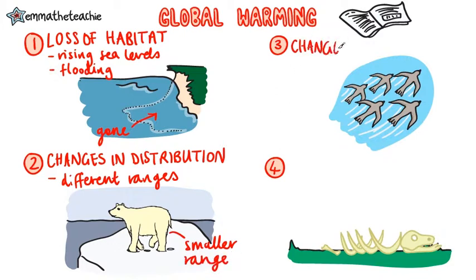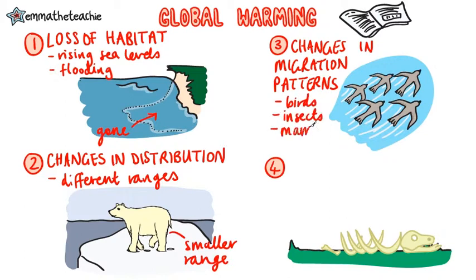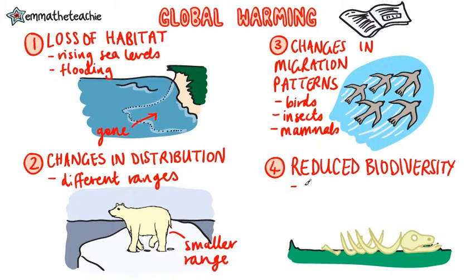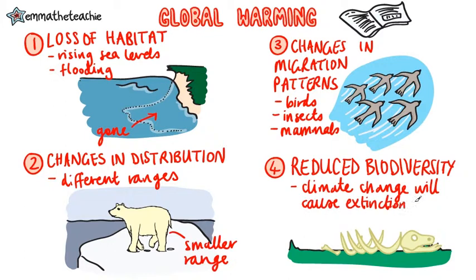Global warming will also cause changes in migration patterns. Many species of birds, insects and some mammals move around the world with the seasons, but this may change as the climate changes. Finally, it will cause reduced biodiversity, as climate change will cause the extinction of many species unable to survive in a changing environment.